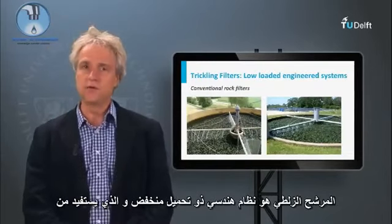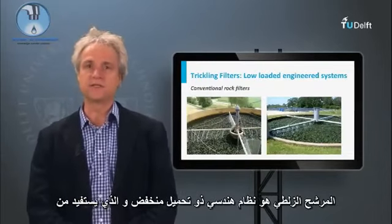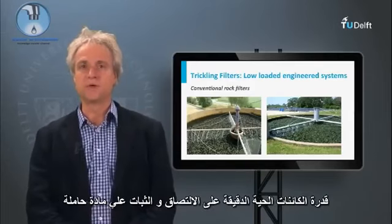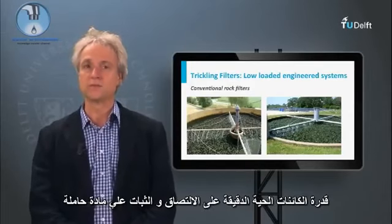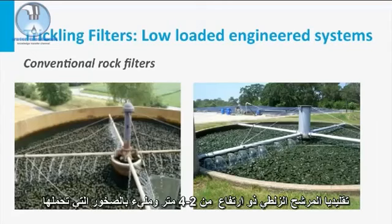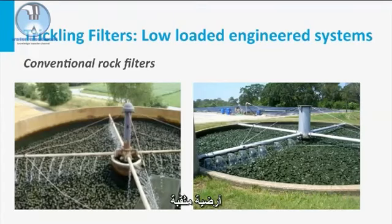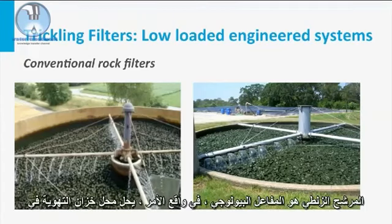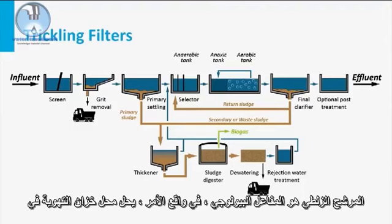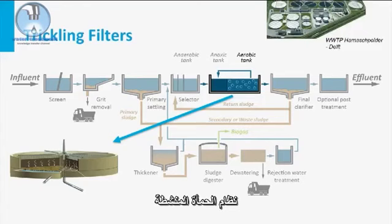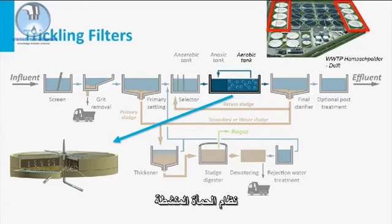A trickling filter is a low-loaded engineered system that makes use of the immobilization capacity of microorganisms on solid support material. Traditionally, a trickling filter is 2 to 4 meters high and is filled with rocks that are mounted on a perforated floor. A trickling filter is a biological reactor and, in fact, replaces the aeration tank in an activated sludge system.